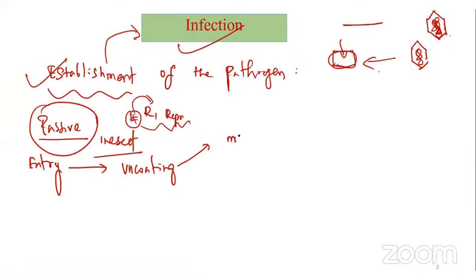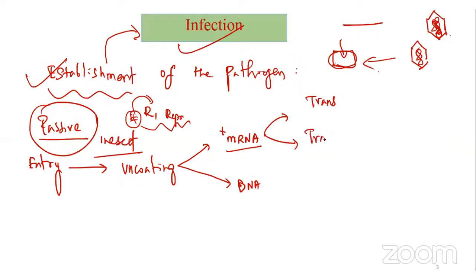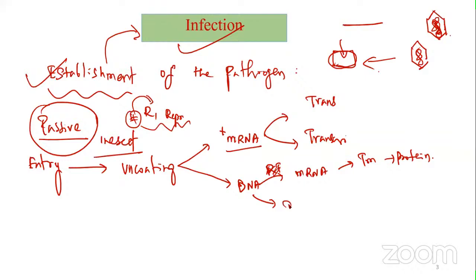After uncoating, the virus releases RNA - usually at the mRNA stage, also called plus-strand, which can go for translation and produce proteins. If it is DNA, it will go for production of mRNA, then translation and protein synthesis. Otherwise it will go directly for replication. There are different procedures for each type of virus.